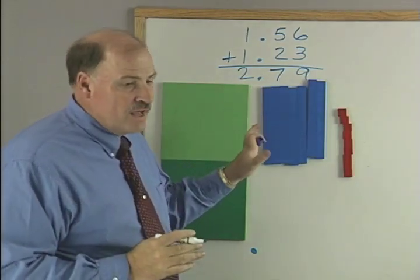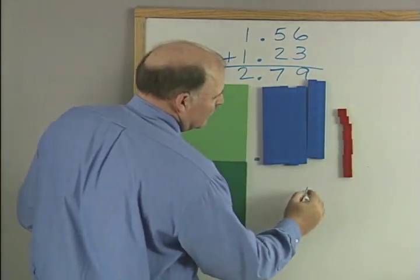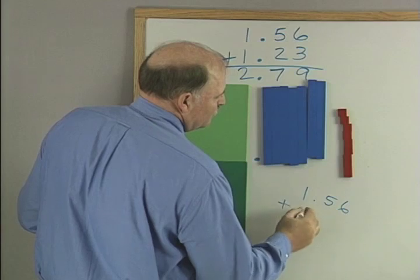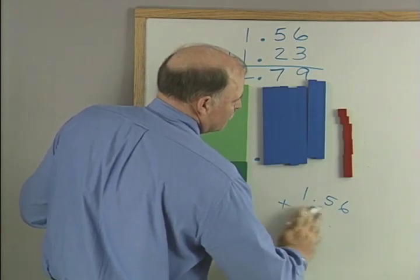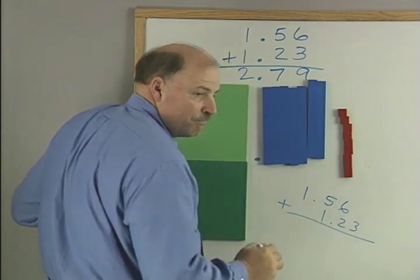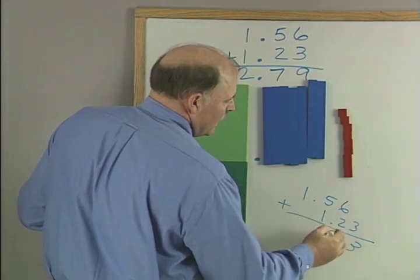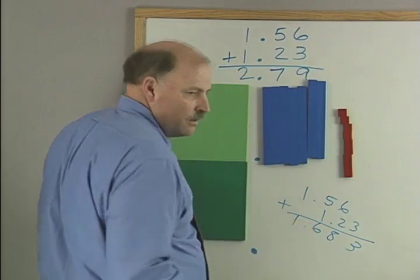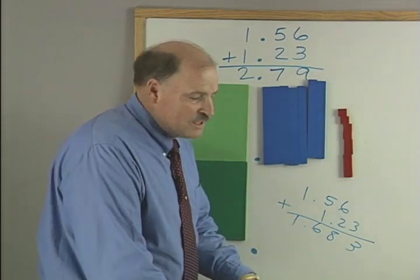But if you don't have the blocks, sometimes people make mistakes and they go like this. 1.56 plus 1.23 like that and they add them up. And you get 3, 8, 6, 1, something goofy like that.